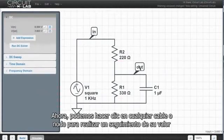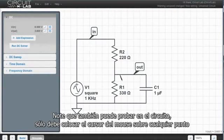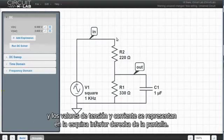Now it says I can click any wire or terminal to track its value, so I'll click on in and out to track those voltages, and the calculated voltages appear. Notice I can also probe around the circuit, just hovering my mouse over any point and quickly see the voltages and currents in the lower right corner of the screen.